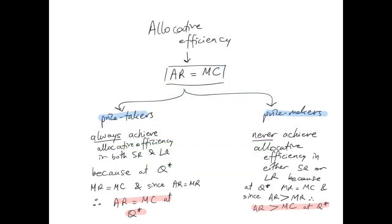The last two concepts to explain in this video are allocative efficiency and productive efficiency. Allocative efficiency will be explained in this slide, productive efficiency in the next. The allocative efficiency condition is when average revenue is equal to marginal cost. Remember, average revenue is another word for price, so the allocative efficiency condition is when price is equal to marginal cost.